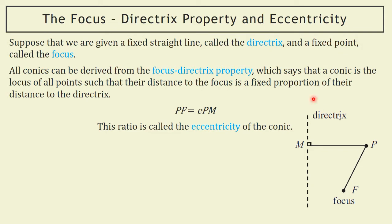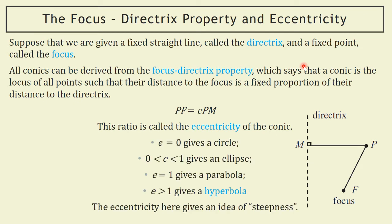If I measure from the point on my conic to the focus, that's going to be e lots of the distance to the directrix. We know that if e is zero we get a circle; e between zero and one gives an ellipse; the parabola we haven't looked at yet and will be coming to next; and if e is greater than one we have a hyperbola. That's what we're looking at now.